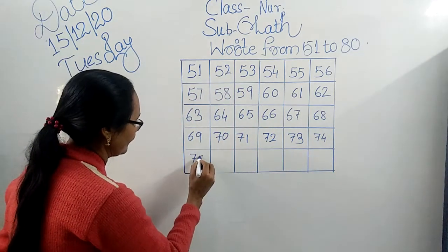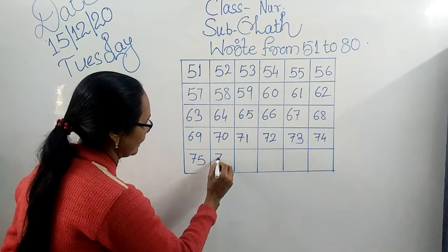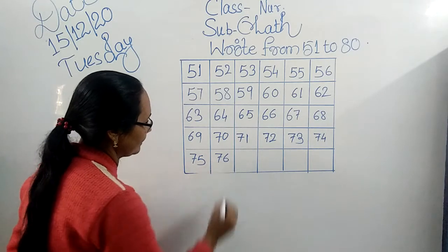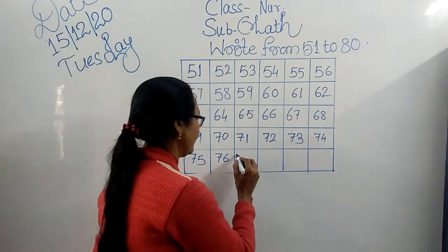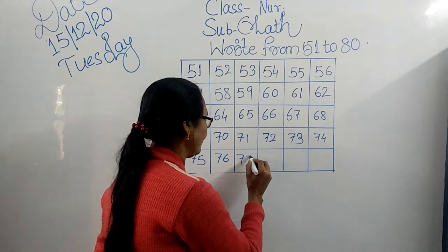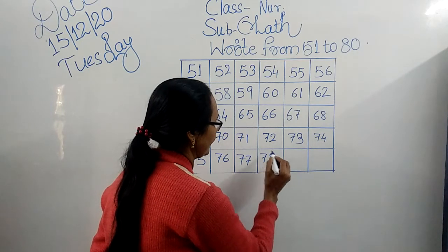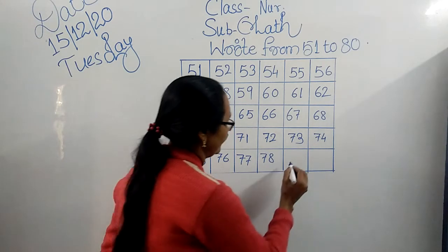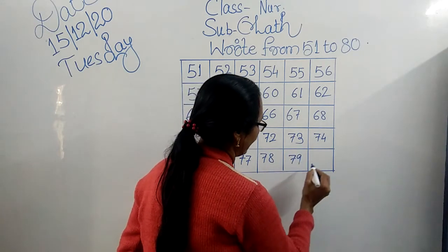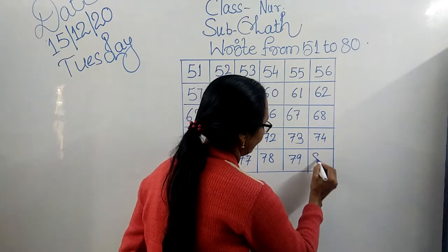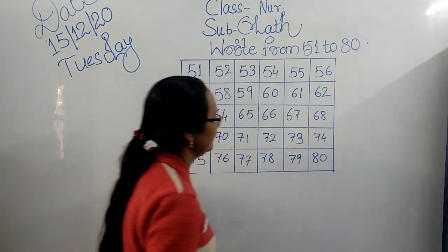7, 5 — 75. 7, 6 — 76. 7, 7 — 77. 7, 8 — 78. 7, 9 — 79. 8, 0 — 80.